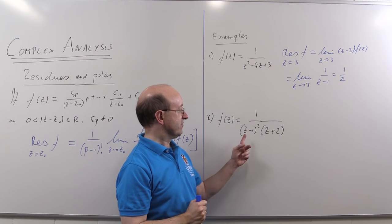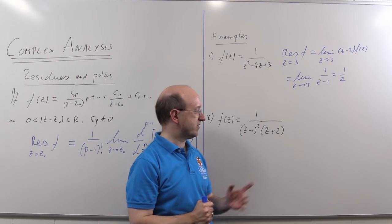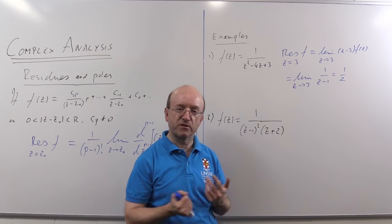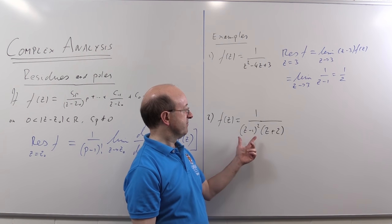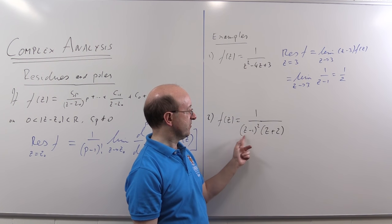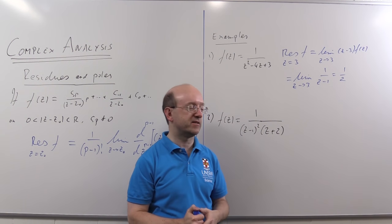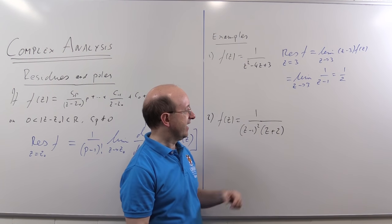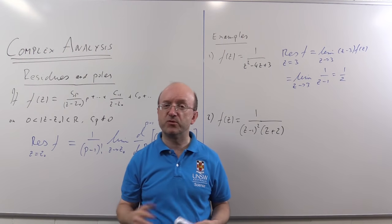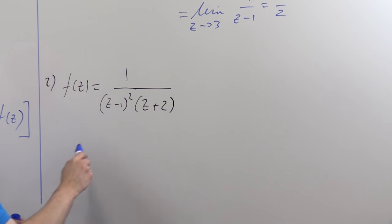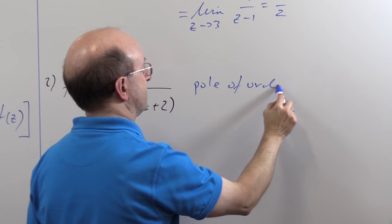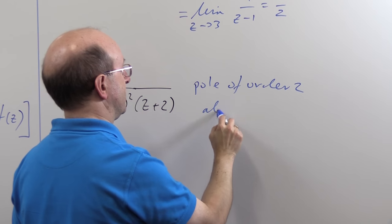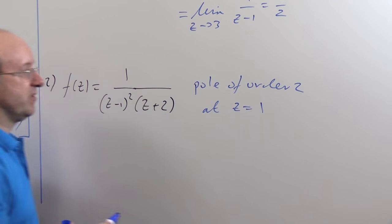My second example, I'm going to find the residue at Z equals 1, which from the shape of it we see is going to be a double pole, a pole of order 2, because we're going to have a zero of order 2 of the denominator. Or we could prove that using the limit.